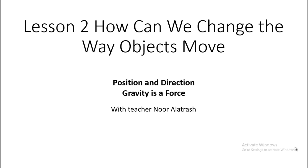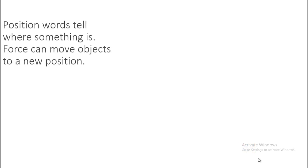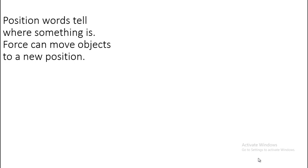Hello again, Grade One! Today we will continue Lesson Number Two: How can we change the way objects move? In this lesson we will identify the words position, direction, and gravity. The boys in this picture are playing with the sand. Some of them move the sand up, some of them move it down. Another boy takes the shells and puts them inside the bucket, and another boy takes it out.